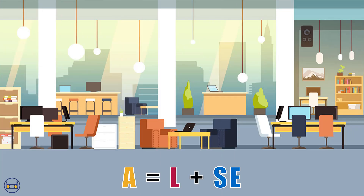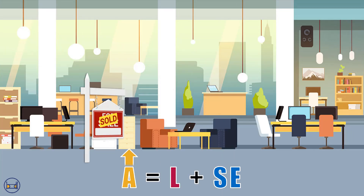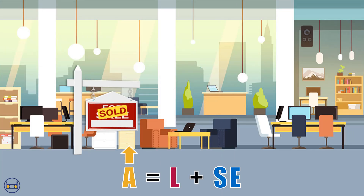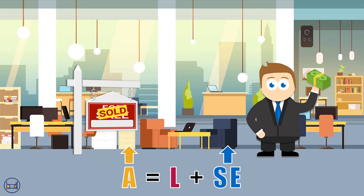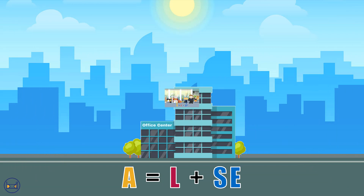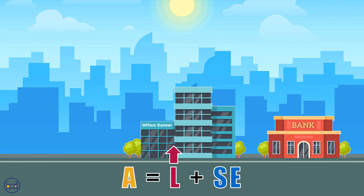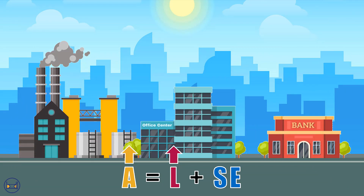For a company to own assets, it must either borrow from others or use the capital of its owners. For example, a startup's first big purchase may be an office space, made possible because its founders contributed money to start the company. In the future, when the startup wants to expand, it may take out a loan from the bank to purchase a new factory. Thus, the value in our assets account must equal the combined value of liabilities and shareholders' equity.